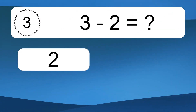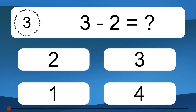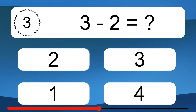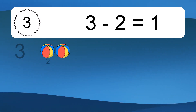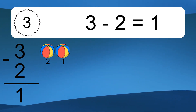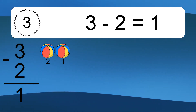3 minus 2 equals what? 3 minus 2 equals 1. Let's count it: 2, 1.